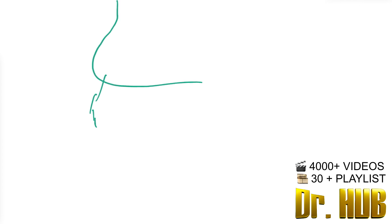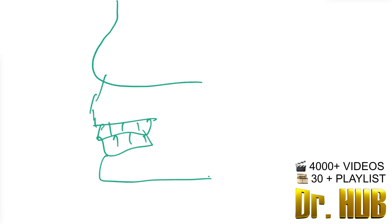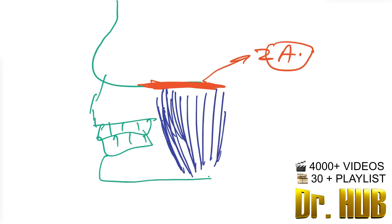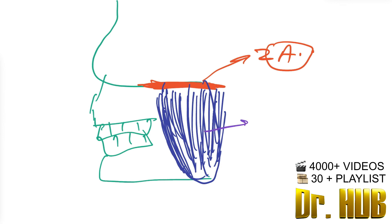In the diagram, we have a skull with the zygomatic arch shown. The masseter originates from the zygomatic arch and inserts at the ramus of the mandible. Its function is to elevate the mandible and protrude the jaw. This is the masseter muscle.